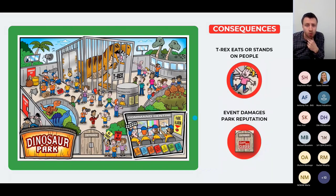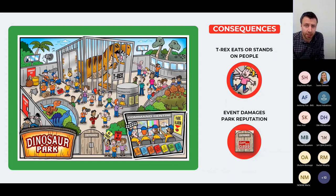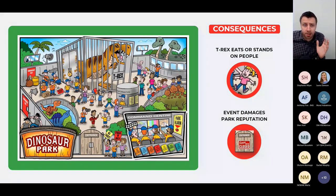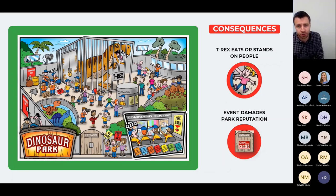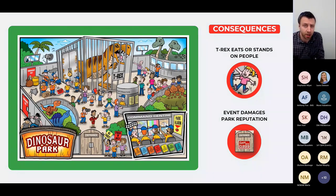Should our angry T-Rex escape, what would the consequences be? Consequences are the harm or damage that could result from the top event. It's common for a top event to have many consequences; normally we focus on the major ones, but lesser ones may also be selected. Much like the hazard and top event, it's important to provide context — 'injury,' 'damage,' 'leak' don't provide enough. Equally, we can be too specific and split the same consequence into two or three. Here we'll choose two: the T-Rex injures or kills people, and the event damages the park's reputation.